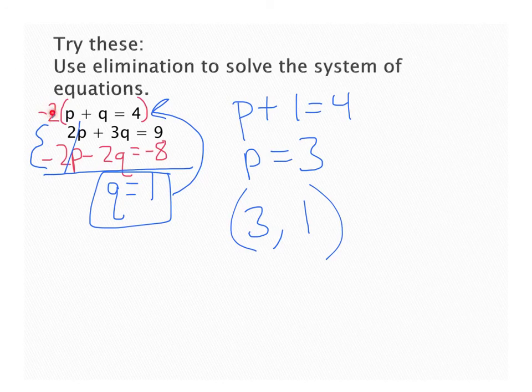I could have used a negative 3 in place of the negative 2, and then my q's would have canceled. I would have solved for p first, and then I would have plugged back in to solve for q. Either one would get you the same answer. It's just up to you about how you want to go about solving the problem.